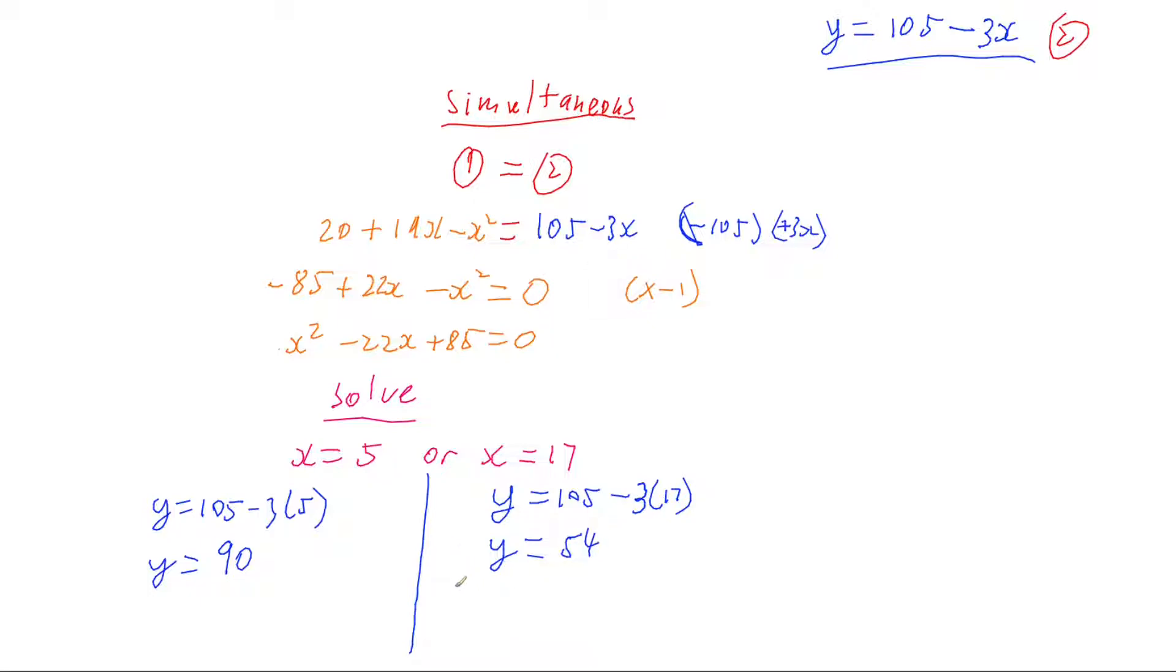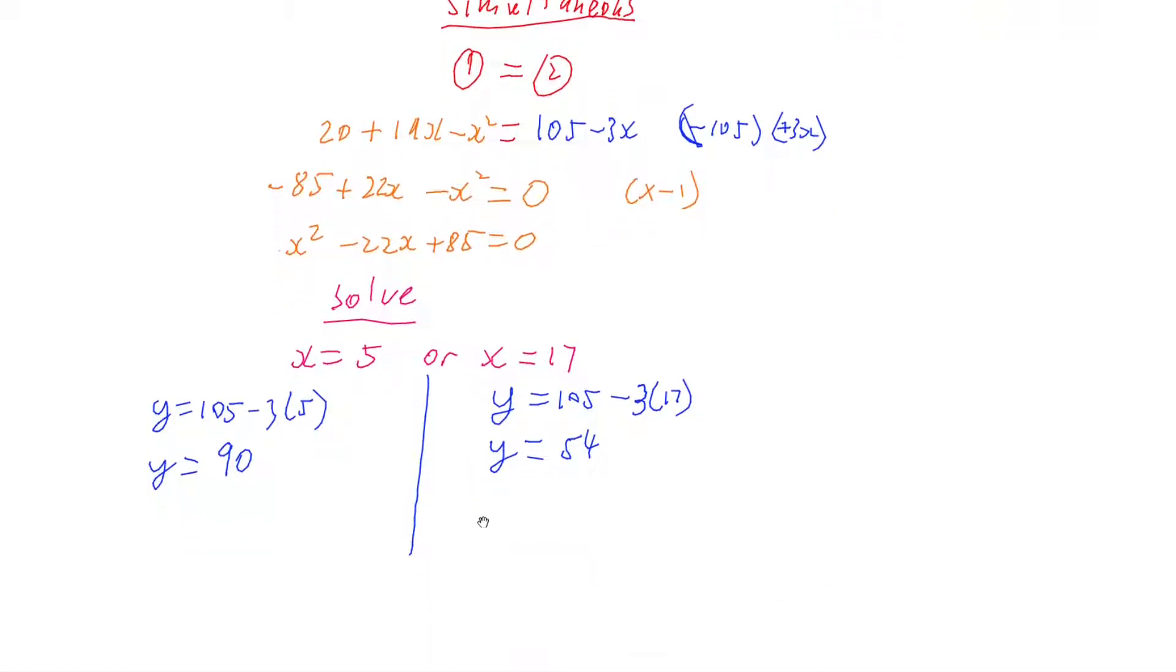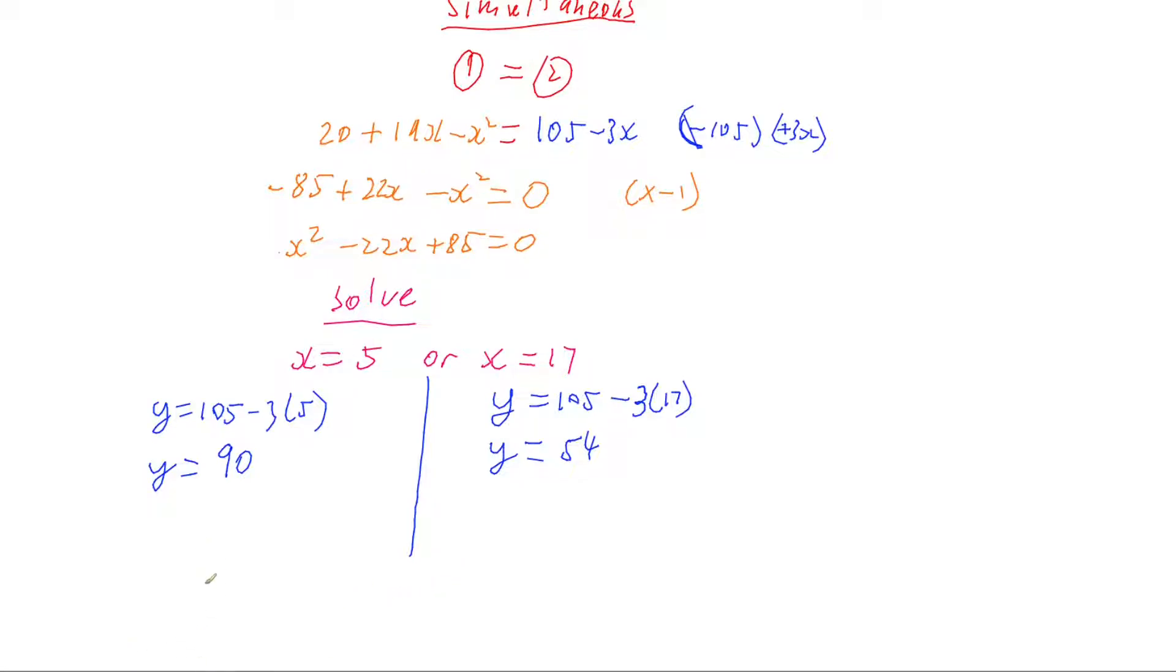So we have two coordinates for where our paths cross and that's our solution. The paths cross at x equals 5, y equals 90 and x equals 17, y equals 54.